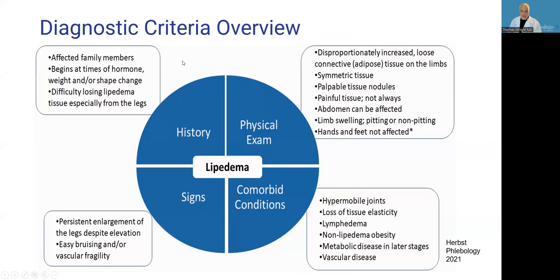The diagnostic criteria are divided into four parts: the history, the clinical signs, the physical exam, and comorbid conditions. This is from the 2021 U.S. standard of care guidelines. Dr. Herbst was the principal author, and I was a co-author.